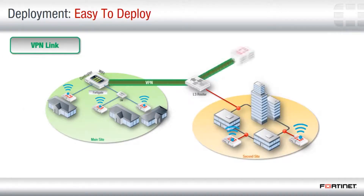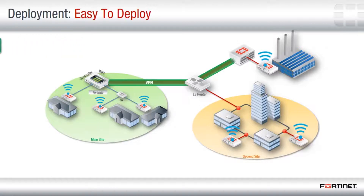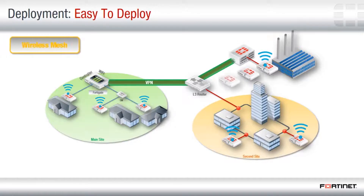A VPN connection may be used to join a remote FortiAP and a FortiGate controller. In a wireless mesh configuration, multiple FortiAPs can expand the area of wireless network access.